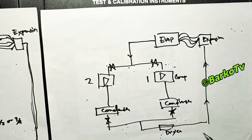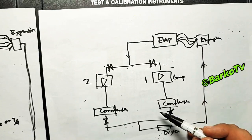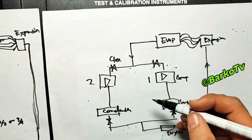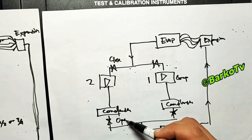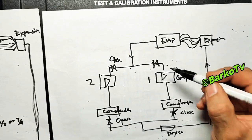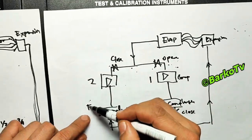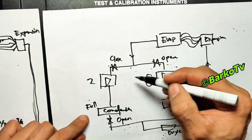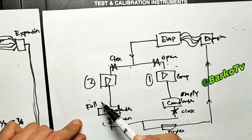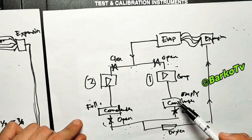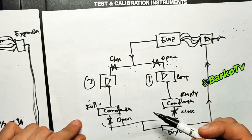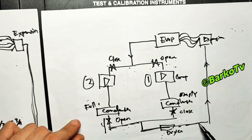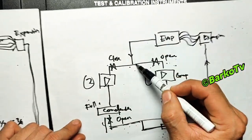At the dryer there is a charging valve for the liquid line. First step: close the suction for number 2. For the compressor, close it. Open after condenser for number 2, close number 1 condenser, open after condenser, and open suction for number 1. Number 2 side glass is about three fourths and number 1 is empty.